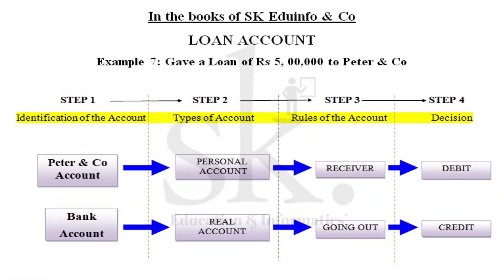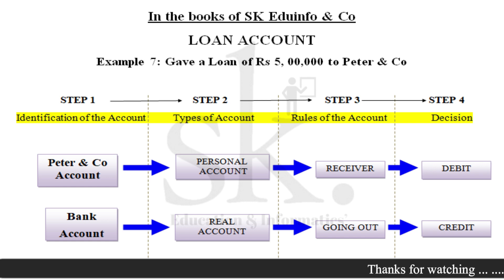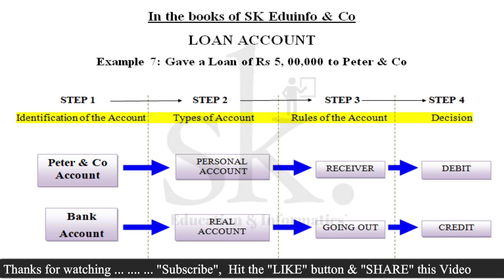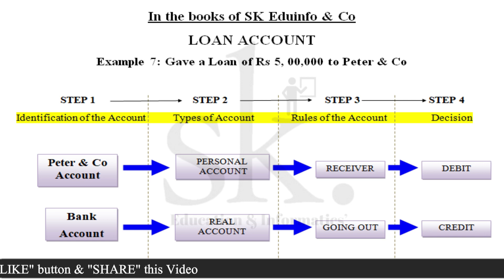Example seven: now we discuss from the point of view of a company giving a loan. The company has given a loan of rupees five lakhs to Peter and Co. by cheque. Peter and Co. is a personal account and, as a receiver, is debited as per personal account rules. Since the company paid by cheque, the bank account falls — real account, amount goes out, so it is credited. Therefore, Peter and Co. account is debited and bank account is credited.